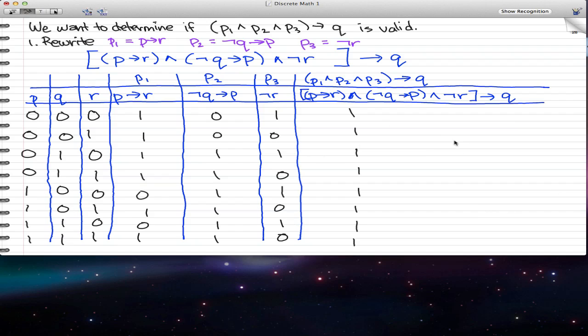What we end up with is, well, we did all this other stuff, but that's not really the main point. The main point is we got all ones, and when we got all ones, we know that this is a tautology.